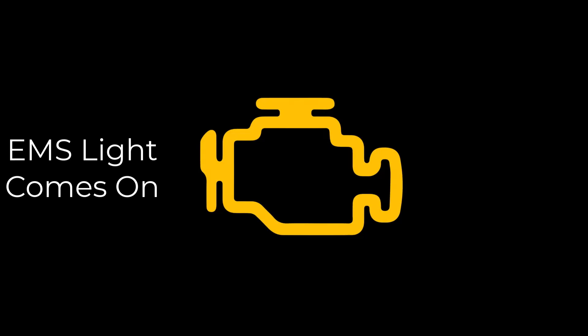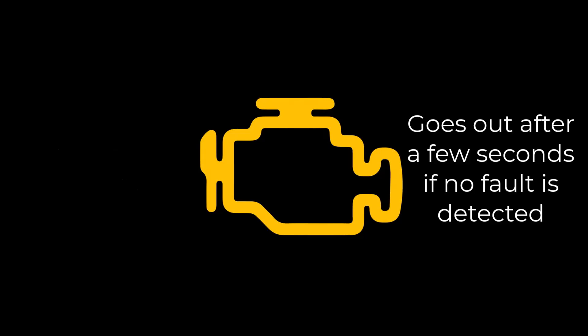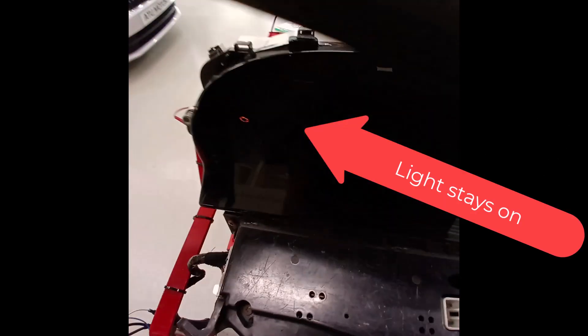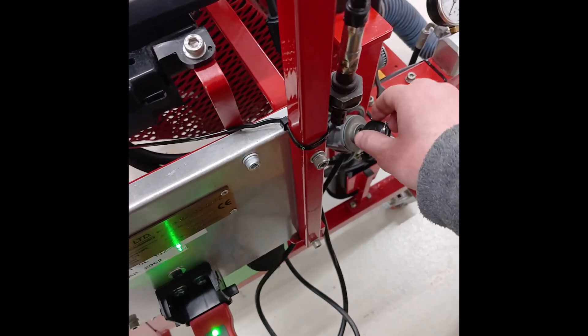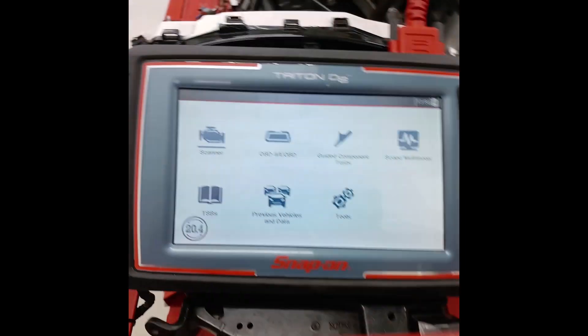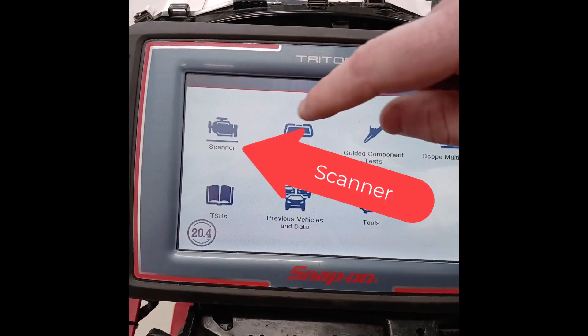The first thing we will do is verify the fault by checking the functionality of the engine management light on the instrument cluster and then we're going to get our diagnostic tool, plug in the vehicle and see what fault codes are stored in the engine management system memory.